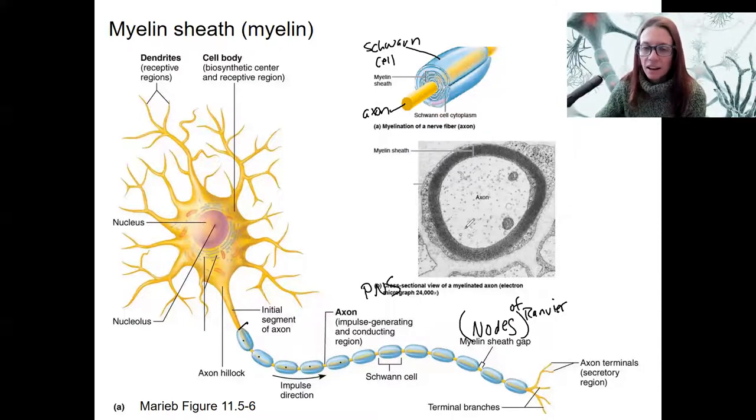This is what it looks like in an electron micrograph, so a real picture. Here's the axon of the neuron. And then the myelin sheath is like insulation.